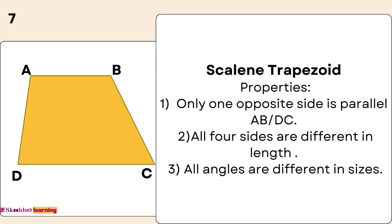Scalene Trapezoid Properties. One: Only one pair of opposite sides is parallel (AB parallel to DC). Two: All four sides are different in length. Three: All angles are different in size.